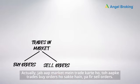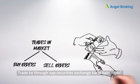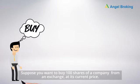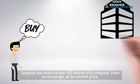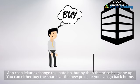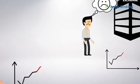When you trade in the market, you can trade by buy orders or sell orders, through which you exchange securities. Suppose you want to buy 100 shares of a company from an exchange at its current price. You go to the exchange, but by then the price has gone up. You can either buy the shares at the new price or you can go back home.